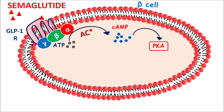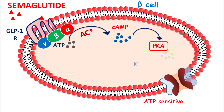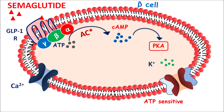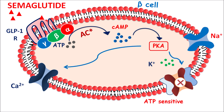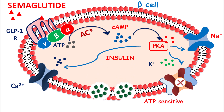Protein kinase A controls the activity of various ion channels — specifically ATP-sensitive potassium channels, voltage-gated calcium channels, and voltage-gated sodium channels. Protein kinase A inhibits ATP-sensitive potassium channels so potassium cannot exit the cell. At the same time, it stimulates calcium channels so calcium enters the beta cells, causing depolarization. It also stimulates sodium channels, allowing sodium entry. By all of these actions, beta cells are depolarized, resulting in the release of insulin, thereby reducing blood glucose levels.